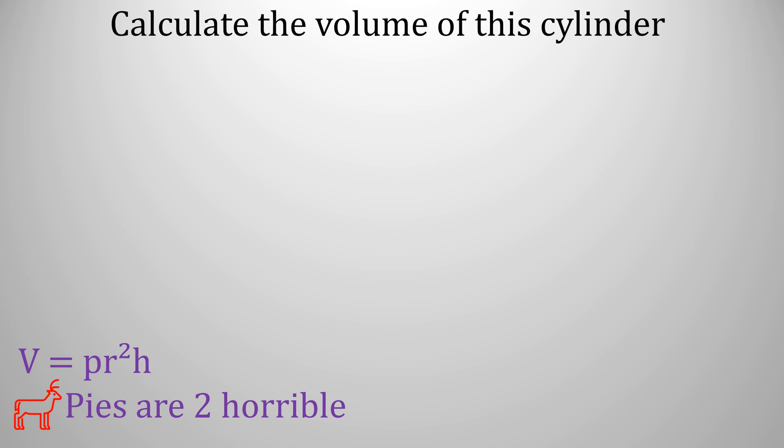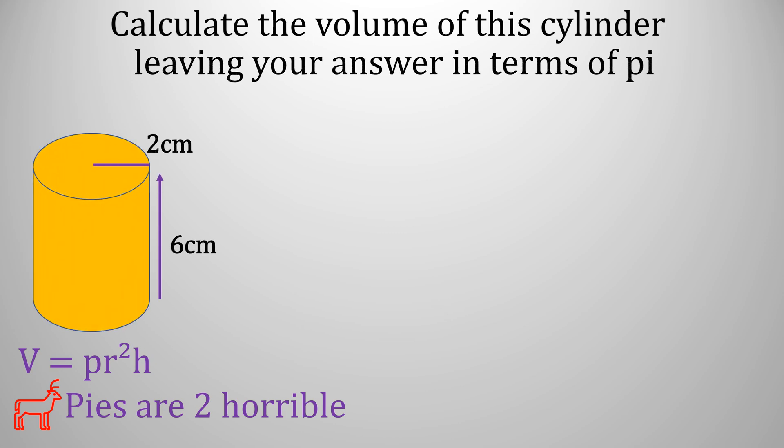Calculating the volume of this cylinder in terms of pi. Our formula is the same as a circle but then we times it by the height to get the length of the cylinder. So we would normally be writing radius squared, 2 times 2 times pi times height which is 6. So if we do 4 times 6, that gives us 24.